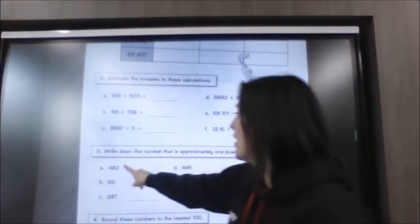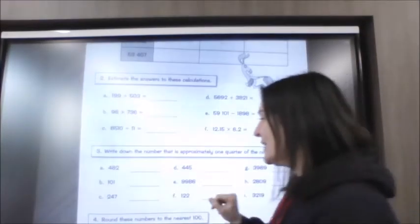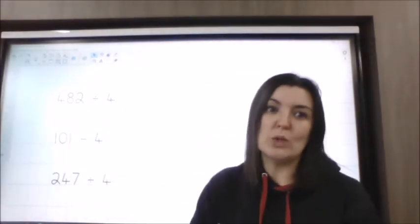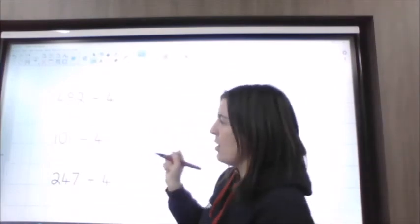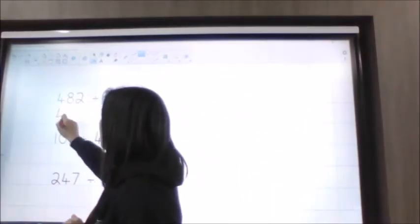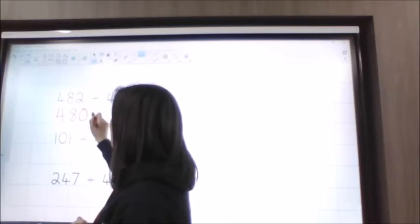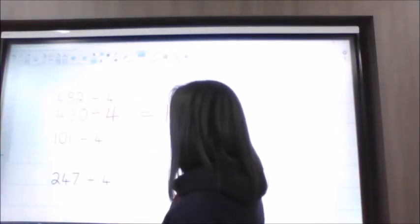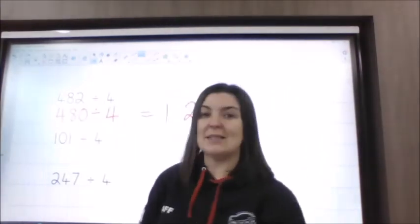When you have one quarter of the number shown, you're just dividing it by four. So you need to use two things today: your knowledge of estimating and your knowledge of the four times table. So 482 — I know that 48 is in the four times table, so I'm going to make that 480. Then I can knock my zero off and do 48 divided by four, which gives me 12, and then put my zero back on to get 120.